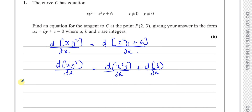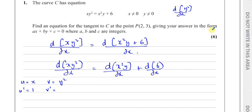So I'm going to differentiate U and V. U dash gives me 1. Now when I differentiate V — differentiating Y squared with respect to X — because Y is actually some sort of function of X, you differentiate as normal: 2 times Y. Then because you have something inside the function, you multiply by the differential of what's inside, which is dy/dx. Just like when you have (X cubed plus 2) to the power of 6 — you get 6 times (X cubed plus 2) to the power of 5, multiplied by 3X squared.